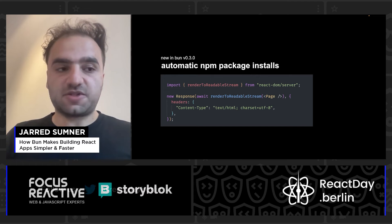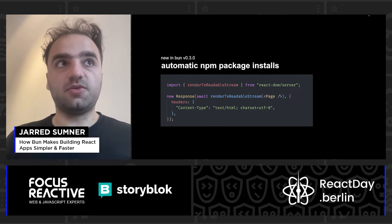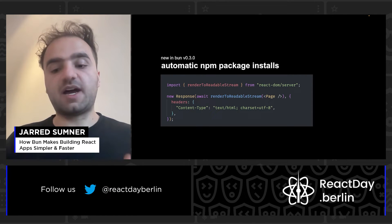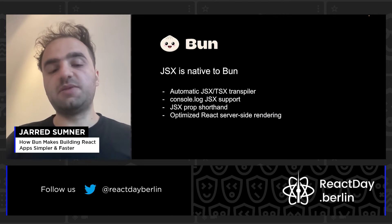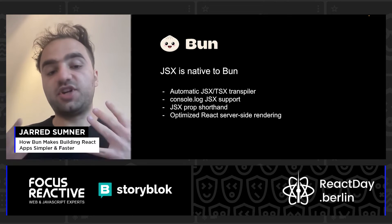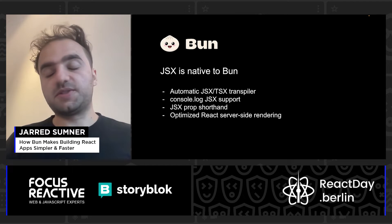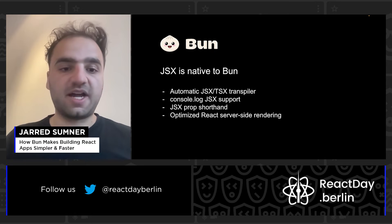Because you don't need a node_modules folder, it saves a lot of disk space and it saves you a lot of time because you don't have to spend time installing packages. It uses a shared global cache. In Bun, JSX is natively supported. There's an automatic JSX/TypeScript transpiler compiler. JSX is even enabled for .js files, and you can also have NPM packages which use JSX, and Bun will just automatically transpile it.